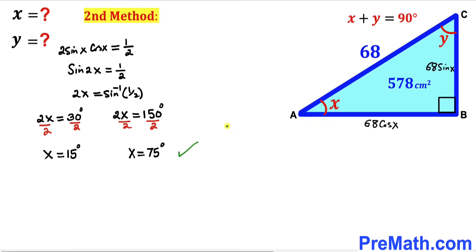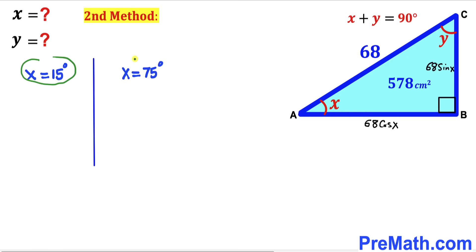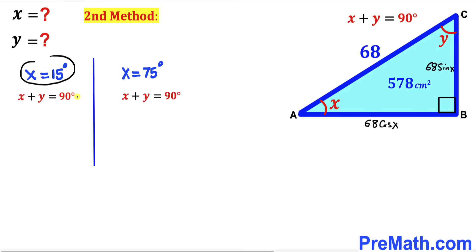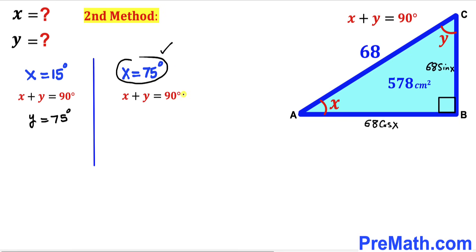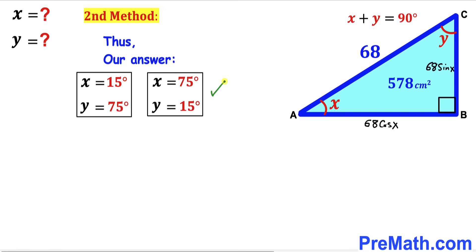We arrive at the same two scenarios: x equals 15 degrees and x equals 75 degrees. Since x plus y equals 90 degrees, if x is 15 degrees then y is 75 degrees, and if x is 75 degrees then y is 15 degrees. Here is our final solution using the second method as well. Thanks for watching and please don't forget to subscribe for more exciting videos.